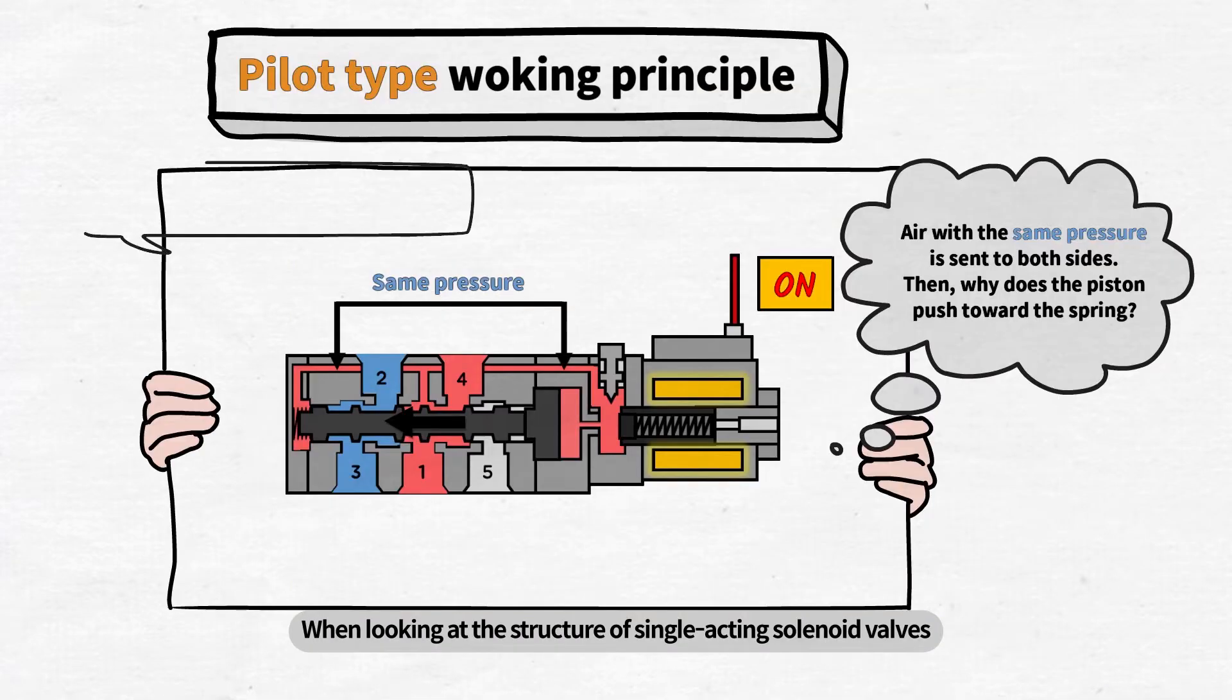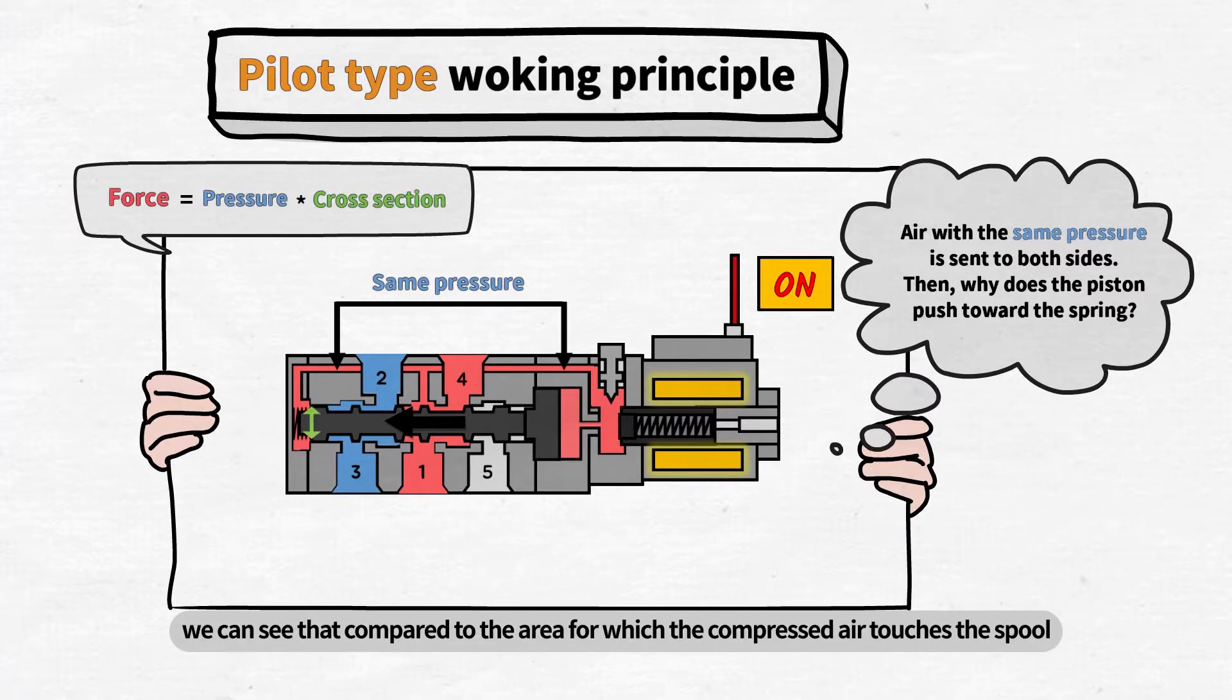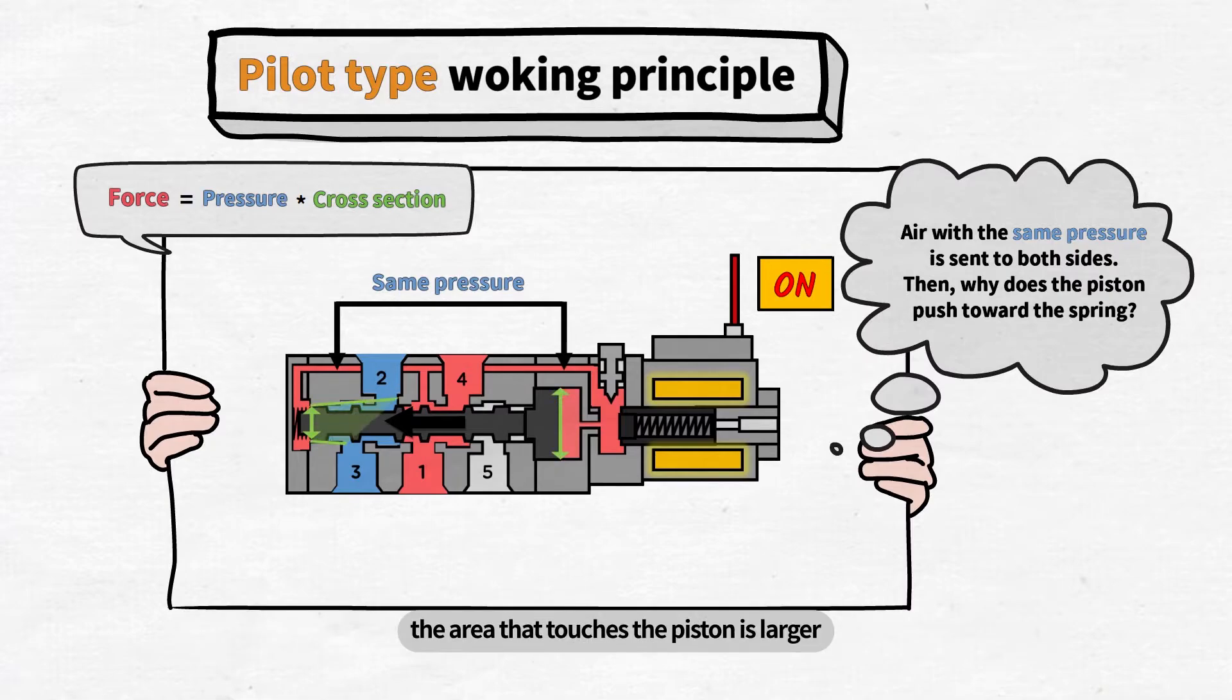When looking at the structure of single-acting solenoid valves, we can see that compared to the area for which the compressed air touches the spool, the area that touches the piston is larger.